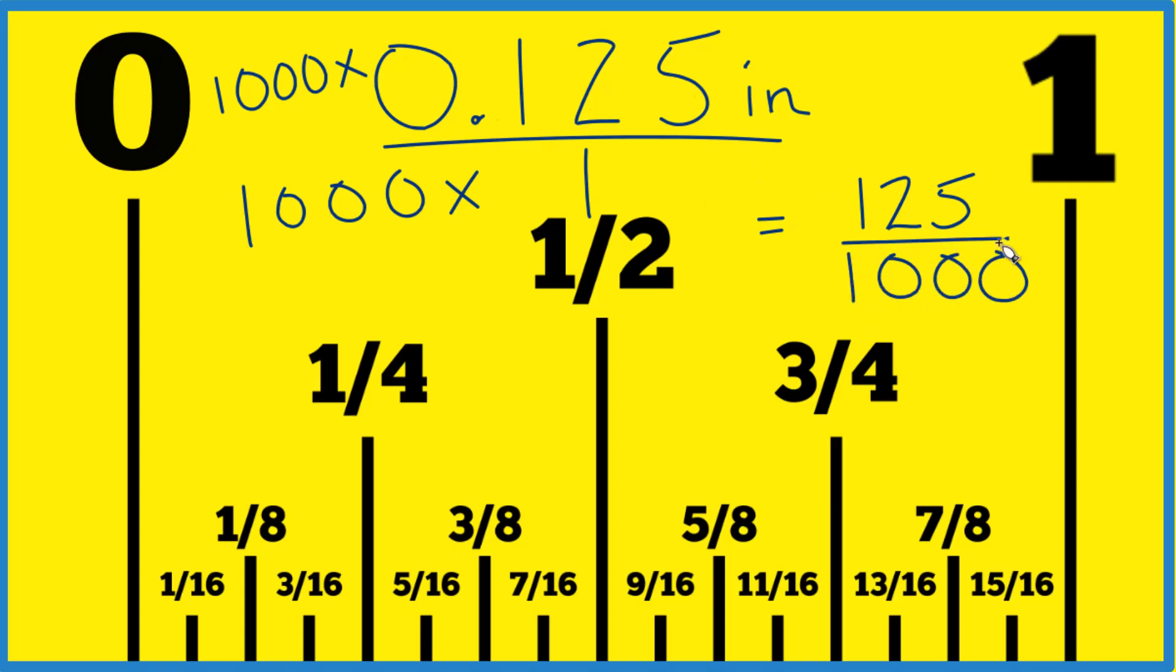So now we have a fraction and there's no decimal. So it makes it a lot easier. 25 goes into 125 five times. Five times 25 is 125 and 25 goes into 1,000 forty times.